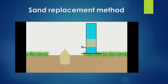If we subtract the weight of sand in the cone from the total sand used, we get the sand that filled the hole. If we already know the density of the sand, we can calculate the volume of the hole.